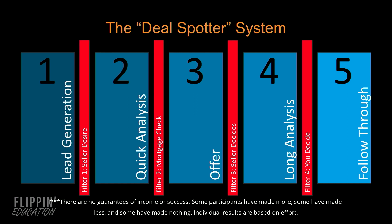If it passes the second filter, we go into step three, where we make an offer on the property. The third filter is the seller decides — they get to decide if they're going to sell you their property for the terms and price you outline in your offer. Step four is long analysis. This is where we bring in our contractors and home inspectors to make sure that this property is exactly what we think it's going to be. Filter number four is you decide: after you've done your due diligence on the property, you get to decide whether to acquire it or not. If it passes this filter, we go into follow-through — we acquire it as a rental property and add it to the portfolio.